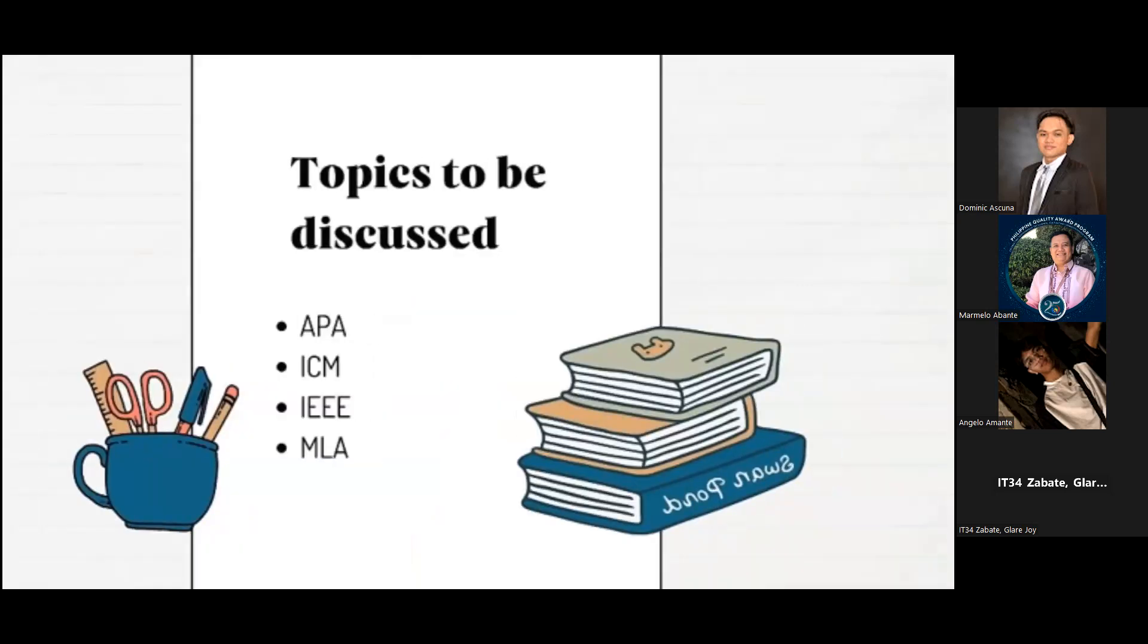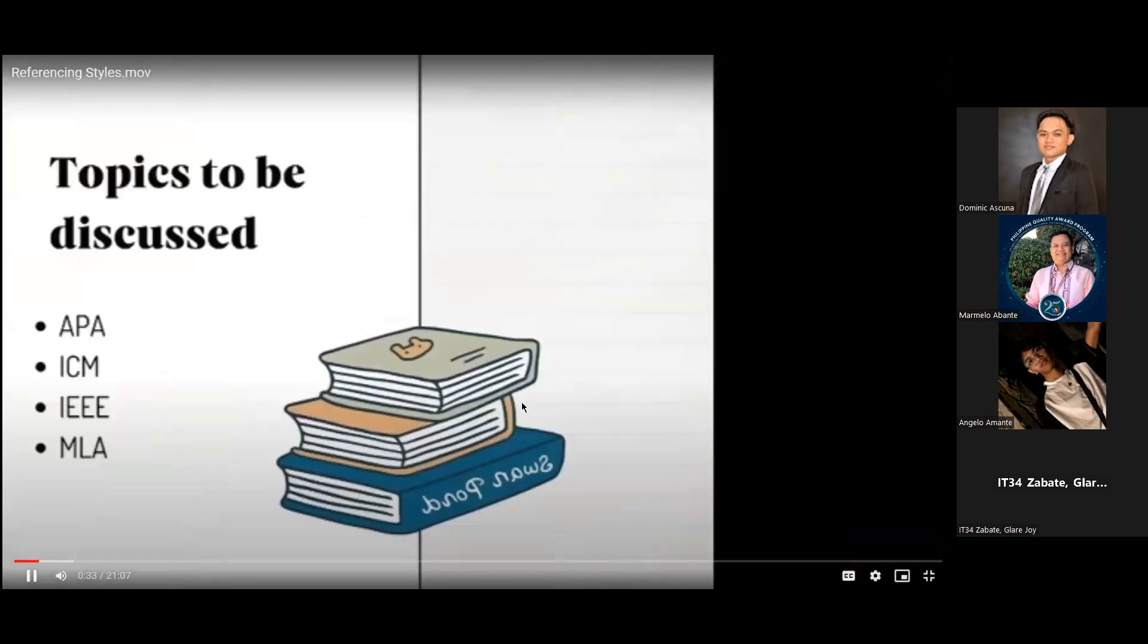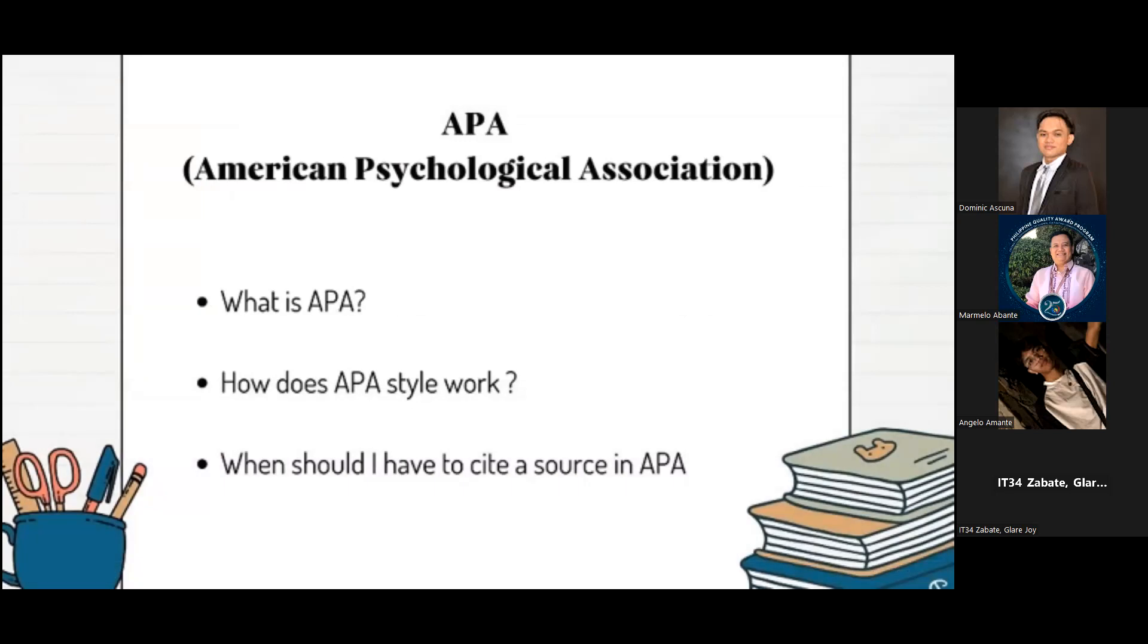Here are the topics that will be discussed today: First is APA, ACM, IEEE, and MLA. I will be the reporter for APA. APA means American Psychological Association. APA is the style of documentation of sources used by the American Psychological Association. This form of writing research papers is used mainly in the social sciences, like psychology, anthropology, sociology, as well as education and other fields.